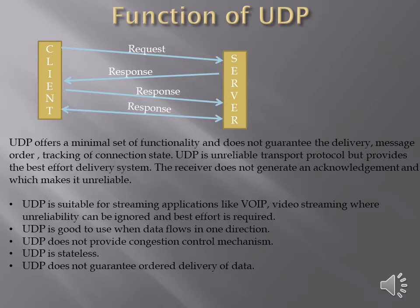Instead, the server sends a response, and the response is again generated from client to server. UDP is suitable for streaming applications like VoIP and video streaming, where some unreliability can be ignored and best effort is required. UDP is good when data flows in one direction. It does not provide congestion control, is stateless, and does not guarantee delivery of data.